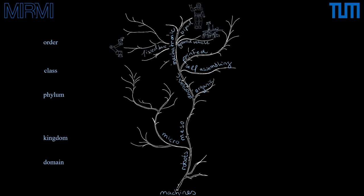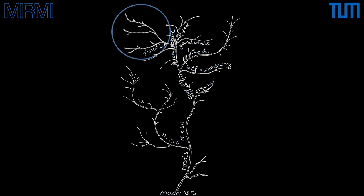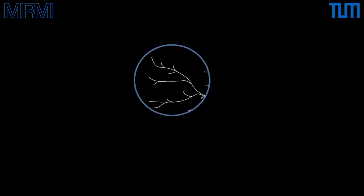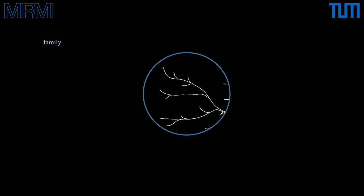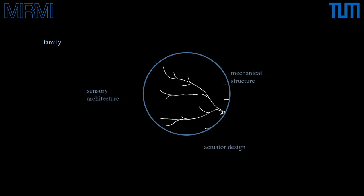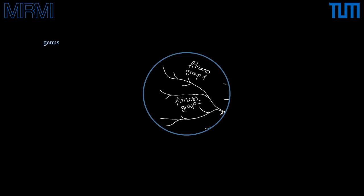Looking at the class of mechatronic robots, there are for example fixed-base robots, ground vehicles, or bipeds. In the branches, we first define the robot family by looking closely at concrete detailed morphological features like sensing architecture, mechanical structure, and actuator design — resulting for example in humanoids or manipulators. Then we link these morphological features to robot capabilities, where the performance of robots in required capabilities — which we refer to as fitness — varies, and certain fitness groups form the genus.